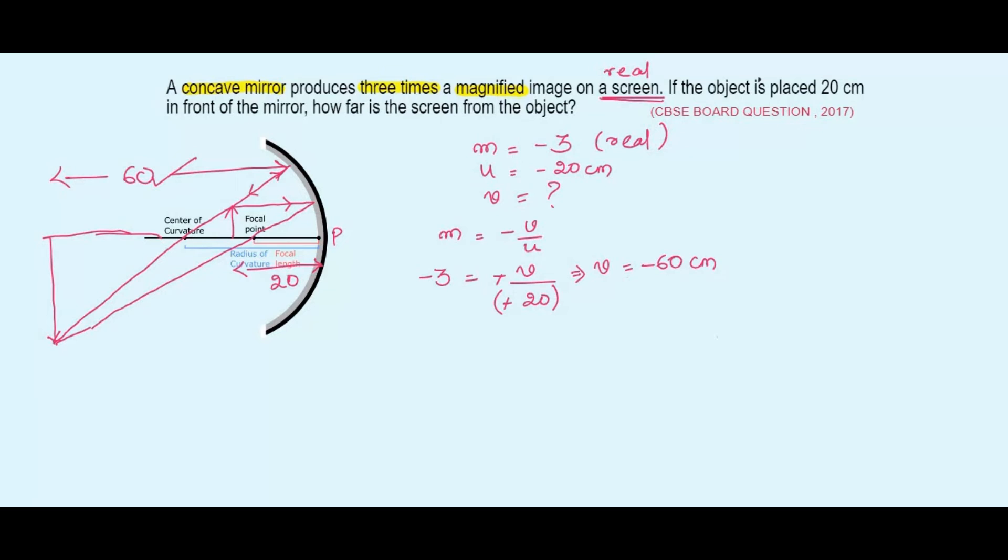So here we got this distance as 60 cm and our object distance is 20 cm. So what have we been asked? We have to find out what is the distance between the screen and the object. Now where do we have to put the screen? We have to put the screen where the image is. So our screen is here. This is the screen and the object is at 20 cm. So we have to find out the distance between the screen from the object. So we have to find out this distance.